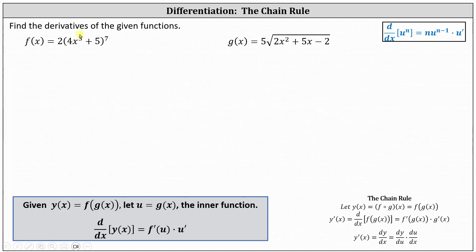Before the next examples, in the upper right-hand corner I have the general power rule, or the power rule that includes the chain rule: the derivative of u to the n with respect to x equals n times u to the power of n minus 1 times u prime.